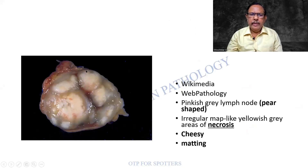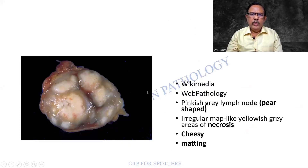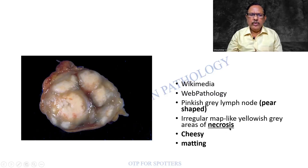I am seeing here a specimen which is roughly pear-shaped or circular, and two adjoining such specimens have been adhering together — we call it matting. The normal tissue is somewhat pale and I am finding pinkish-yellow areas which are map-like, yellowish-grey or pinkish-grey areas of necrosis which are cheesy in appearance.